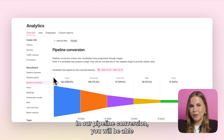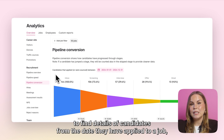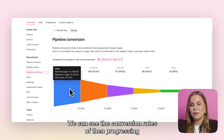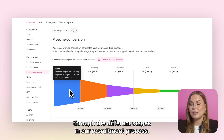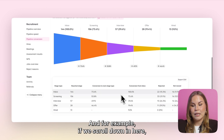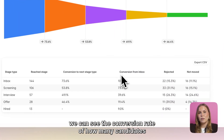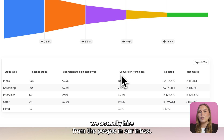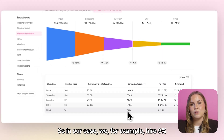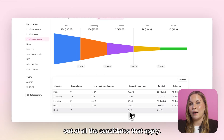In our pipeline conversion you will be able to find details of candidates from the date they have applied to a job or from the date they have been sourced into a job. We can see the conversion rates of progressing through the different stages in our recruitment process. For example, if we scroll down we can see the conversion rate of how many candidates we actually hire — in our case we hire nine percent out of all the candidates that apply.